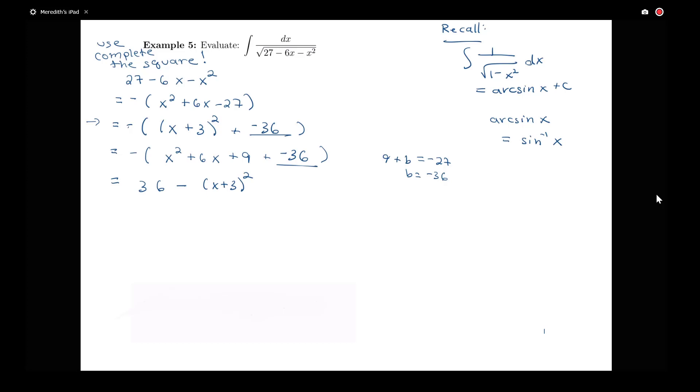So now I have that my integral of dx over the square root of 27 minus 6x minus x squared is equal to this integral of dx over the square root of 36 minus x plus 3 squared. So that doesn't look exactly like that integral of 1 over the square root of 1 minus x squared.